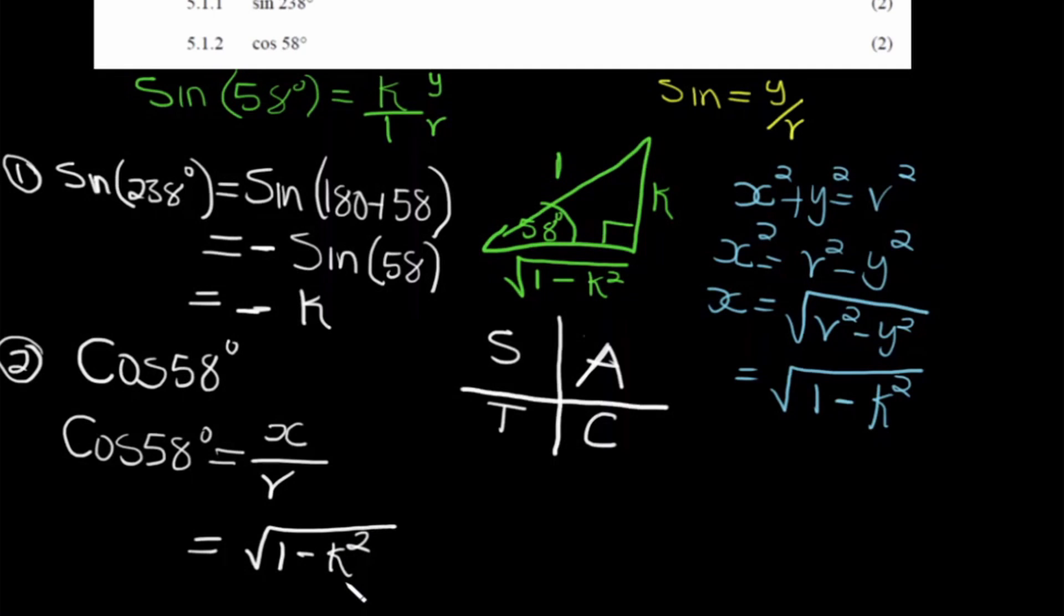So we divide by the value of r. The value of r in our triangle is 1. So the final answer is the square root of 1 minus k squared, because when you divide any number by 1, you get that same number.